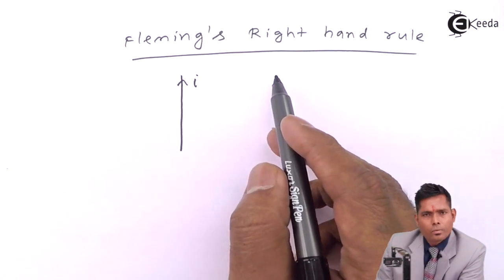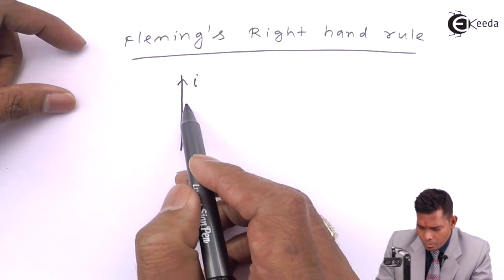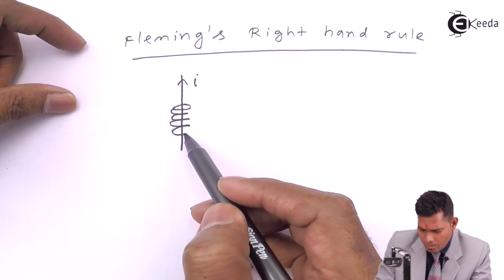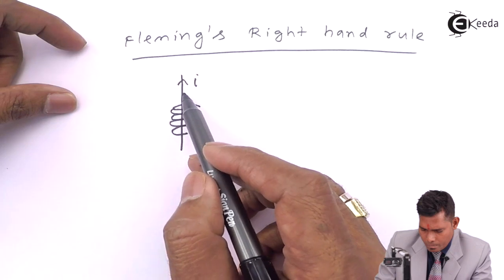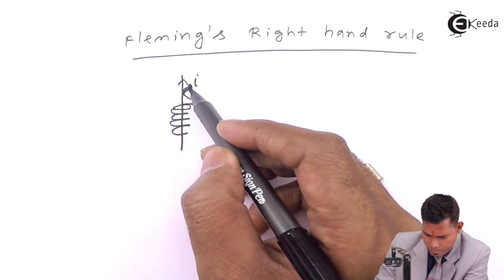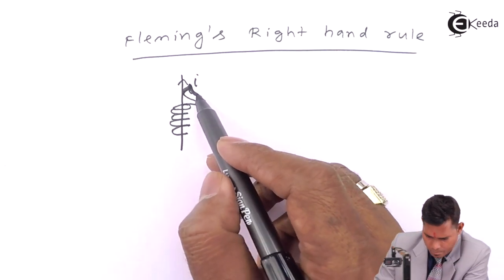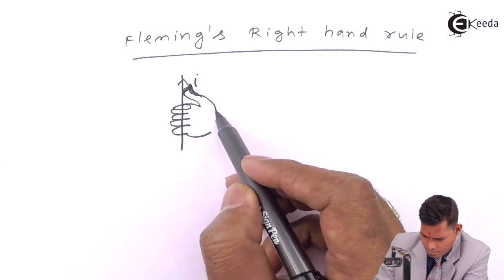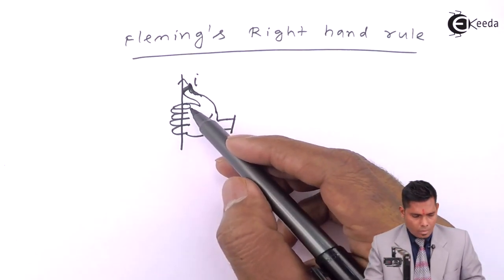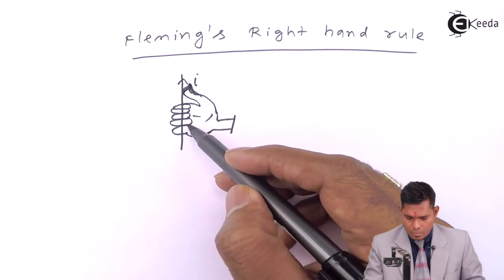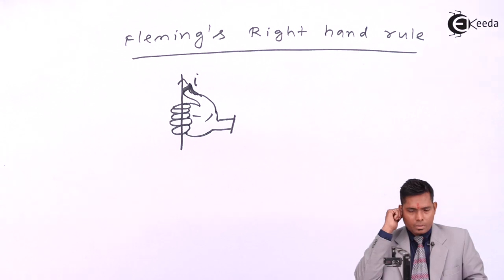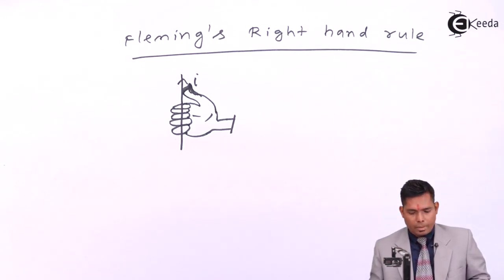So that is Fleming's right-hand rule. If you hold the conductor in your right hand with the thumb in the direction of the current, then the curled fingers give you the direction of the magnetic field.